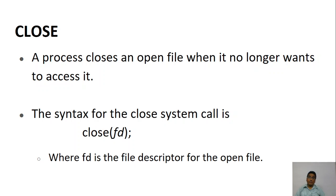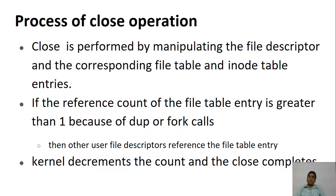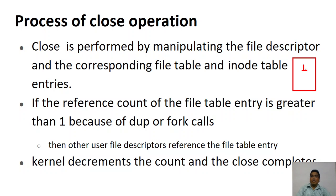Once we have used the file, we need to close it — that is really important so that others can make use of the file. The system call used to close the file is CLOSE, and we need to specify the file descriptor that was used while opening the file. If the file is being referred to by only one process — the last reference — then calling CLOSE will completely close the file.